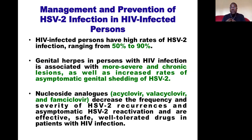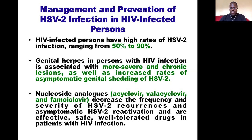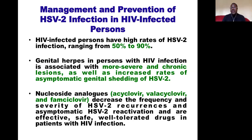Genital herpes in persons with HIV infection can appear much more severe and chronic, and even asymptomatic patients keep shedding and can transmit the virus. There are approved drugs belonging to the family of nucleoside analogs: acyclovir, valacyclovir, and famciclovir, which can be used for treatment or as preventive therapy to prevent the occurrence of HSV-2 in an HIV-infected patient.